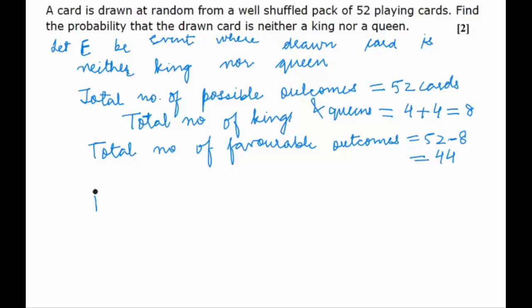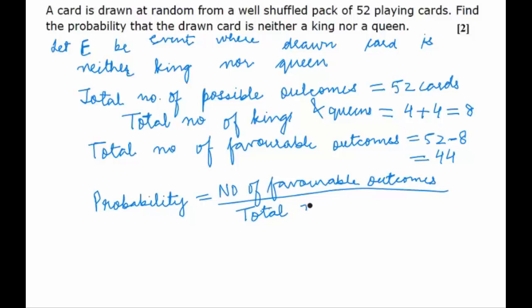Now we apply the probability formula that probability is the ratio of favourable outcomes by total number of outcomes. Thus this would give us the ratio 44 upon 52 which can be simplified to give 11 upon 13.